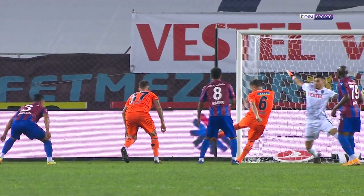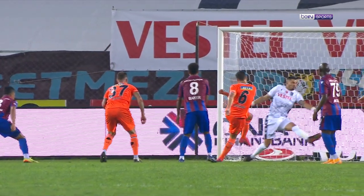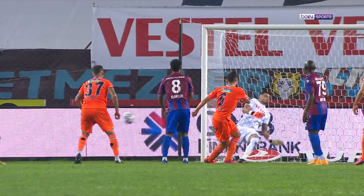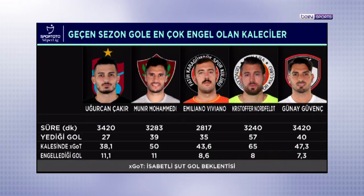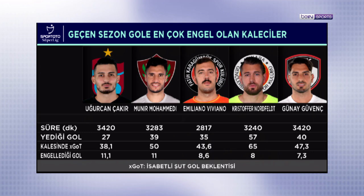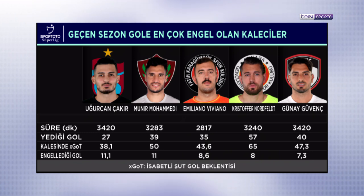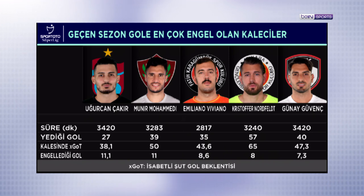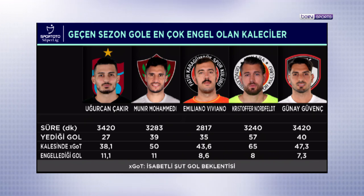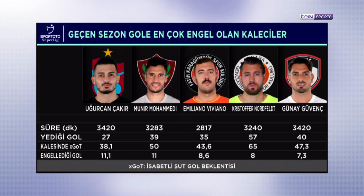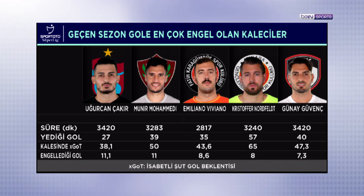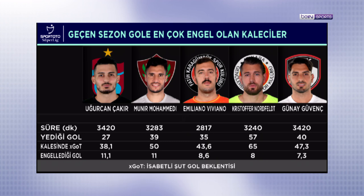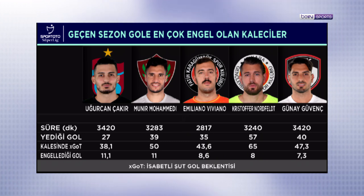Kalecilerin gol beklentisine karşı koyma performansı için geçen sezona dönelim. Uğurcan Çakır, fark üzerinden baktığımızda, penaltılar ve kendi kalesine goller hariç bakılan listenin zirvesinde. Yaklaşık 38 isabetli şut gol beklentisinden yediği 27 golle 11 gollük kurtarış yapmış olan Uğurcan'ı, 50 gollük isabetli şut gol beklentisinden 30 gol yiyen Münür Muhammed az farkla takip ediyor.